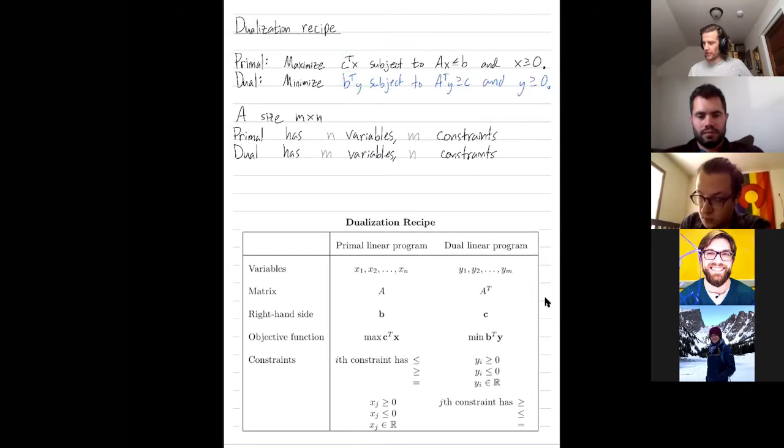So now you look at the constraints. In this particular example, all of our constraints were less than equal to's, and that's why in the dual problem, all of our constraints on the variables were non-negativity constraints.